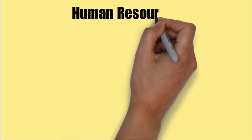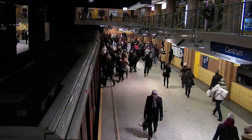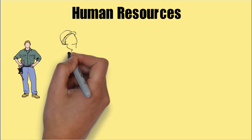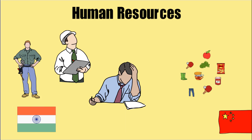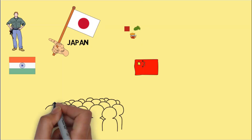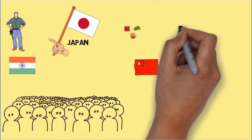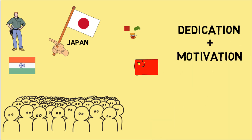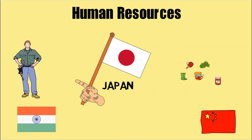The second determinant of aggregate supply is human resources. Human resources refer to the labor force a country has. It is common sense that a country with more labor force will produce a higher amount of output — for example India and China — whereas a country with a lower amount of labor force, like Japan, will produce a smaller output. However, just having too many people to work is not enough; they should all be dedicated, motivated, and highly skilled to produce a high amount of output. All these factors contribute to human resources.